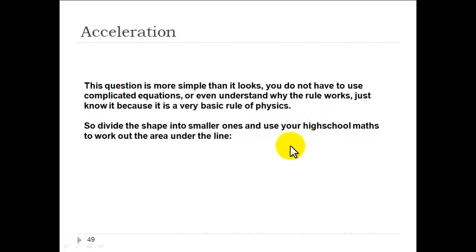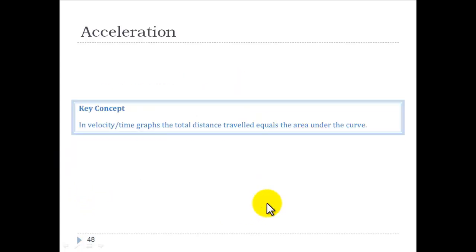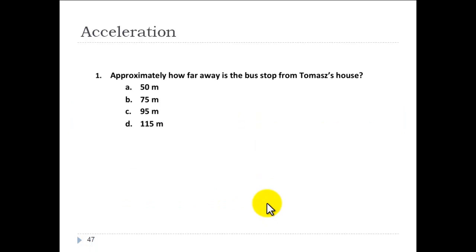Divide the shape into smaller ones and use your high school maths to work out the area under the line. You have 4 seconds times 12 and then you've got half of that. 4 times 12 is a square. 2 times 10 is a little square. 3 times 2 times a half is a little square there. Add all of those up together in this little equation and you'll find that the area equals 95, which was C.